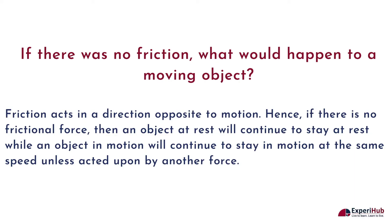If there was no friction, what would happen to a moving object? Friction acts in a direction opposite to motion. Hence, if there is no frictional force, then an object at rest will continue to stay at rest, while an object in motion will continue to stay in motion at the same speed unless acted upon by another force.